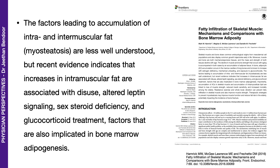The factors leading to accumulation of intra- and intermuscular fat or myosteatosis are less well understood. But recent evidence indicates that increases in intramuscular fat are associated with disuse, altered leptin signaling, sex steroid deficiency, and glucocorticoid treatment.